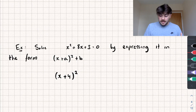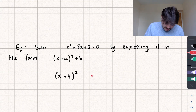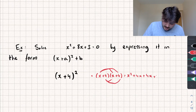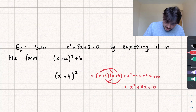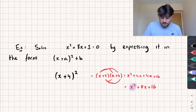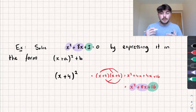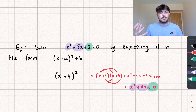When I expand this, I want it to be equal to the original quadratic equation. Expanding x plus 4 multiplied by x plus 4 gives x squared plus 4x plus 4x plus 16, which simplifies to x squared plus 8x plus 16. Comparing this to what we want: x squared and x squared match, plus 8x and plus 8x match, but the constant is plus 16 and we want plus 3. So we subtract 13 from the bracket, which gives us what we want.